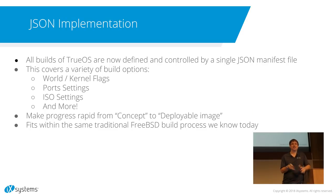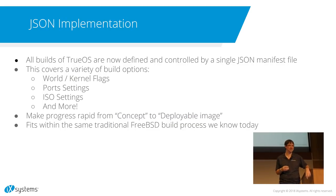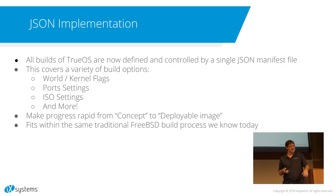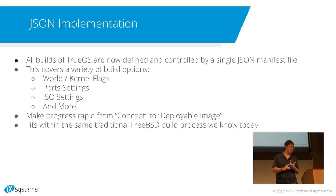TrueOS, if you haven't run it recently, it's no longer really focused on desktop. It's more of a building platform for other desktops and systems. GhostBSD is based on it, we're working on a build of FreeNAS based on it, and Project Trident — a Lumina-based desktop — is built on this as well. They all are able to do this with a single JSON manifest file, which can cover world environment options, kernel flags, port settings, ISO settings, and more.